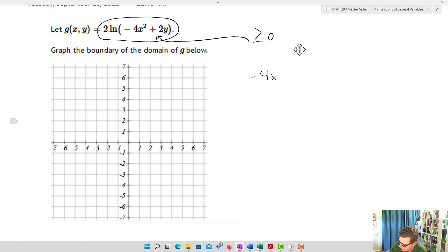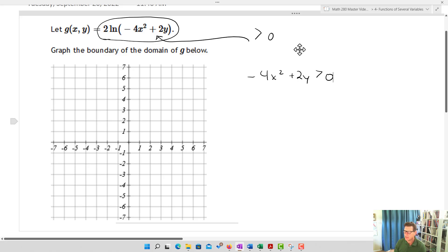So we get negative 4x squared plus 2y is going to be greater than or equal to zero. Actually, that's going to be not greater than or equal to, excuse me, just strictly greater than because it's the natural log, so strictly greater than zero.